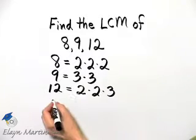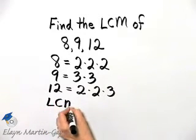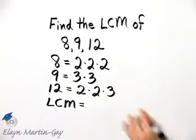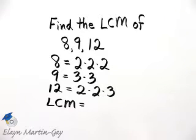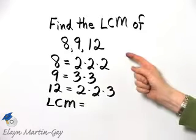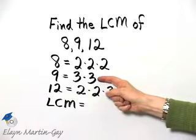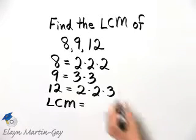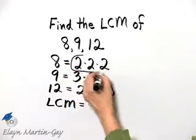Once we have everything written as a product of primes, we can see the least common multiple. We write down every single different prime factor the most number of times it occurs in any one factorization. Notice we have the prime factor of 2: it occurs 3 times in 8, 0 times in 9, and 2 times in 12. So the most number of times 2 occurs in any one factorization is 3 times, right here in 8.